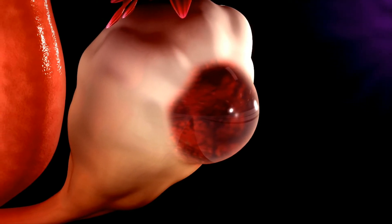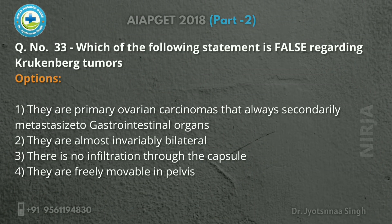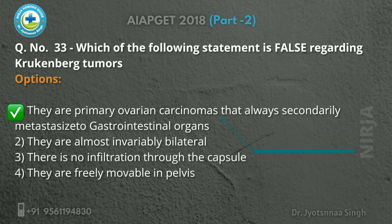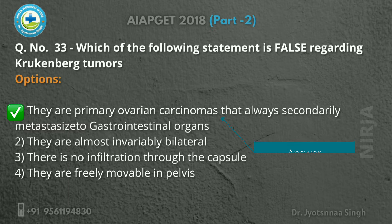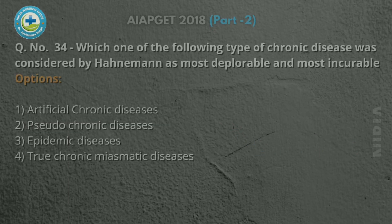Now we will look at the options to find the false one. The first option states they are primary ovarian carcinoma — this is the false statement, because Kruckenberg tumors are secondary ovarian carcinoma, not primary. The other options — they are almost invariably bilateral (true), there is no infiltration through the capsule (true), and they are freely movable in the pelvis (true).